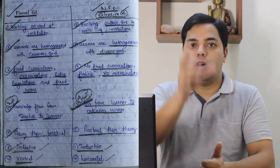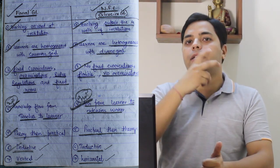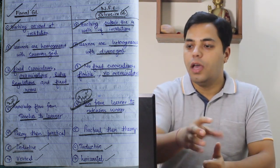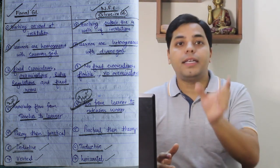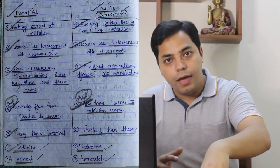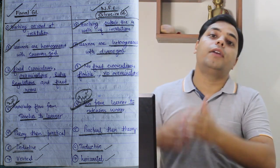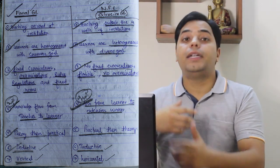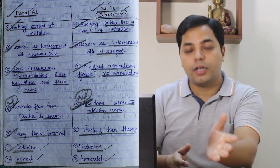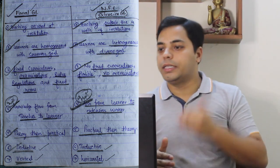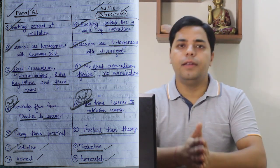In non-formal education, learners are heterogeneous — one farmer may be 25 years old, another 60 plus; some may be economically sound, others marginalized small farmers — with diverse goals. Some are rice farmers, some wheat farmers, some doing vegetables, each needing different training. In formal education there is a fixed curriculum, examination systems, rules, regulations, and fixed norms. In non-formal education there is no fixed curriculum — it is flexible with no examinations of farmers.